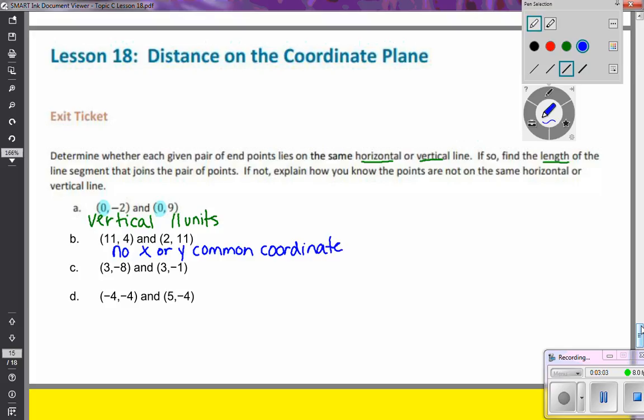So looking at letter C, I have (3, -8) and (3, -1). My first thing I'm going to do is look for a common coordinate. So here, it looks like, just like the other one, we have a 3 that's in common for the x-coordinate. And if the x-coordinate, both of them move 3 to the right, the y-coordinate is going to determine if it either just moves up or down.